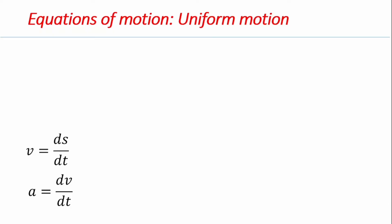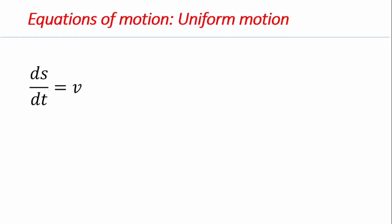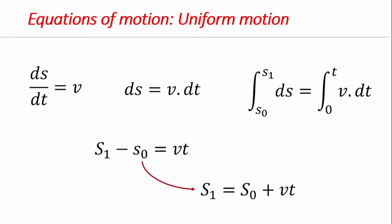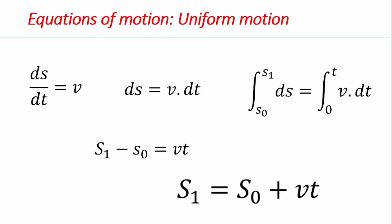Because acceleration is zero for uniform motion, we work with just the velocity equation. Rearranging gives ds/dt = v. Multiplying both sides by dt, and then integrating with limits from s0 to x1 for position and 0 to t for time, we get x1 minus x0 equals vt, which rearranges to x1 = s0 + vt. This is the valid equation for uniform motion. When s0 is taken as zero, distance is simply the product of velocity and time.